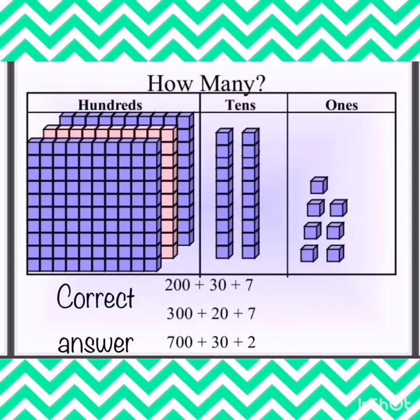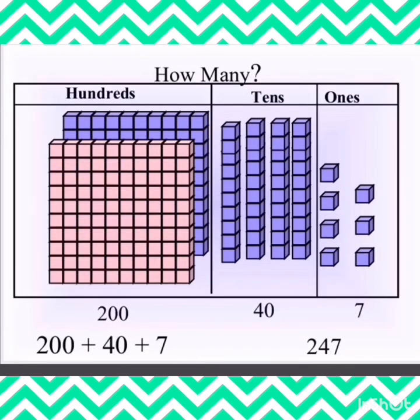Next number is 327: small blocks of ones go under the ones position, 2 tall blocks under the tens position, and 3 big blocks of hundreds under the hundreds position — that makes 327. Next, number 247 — 200 plus 40 plus 7 makes 247.